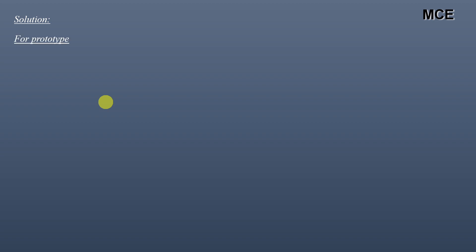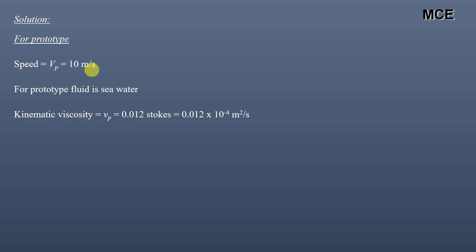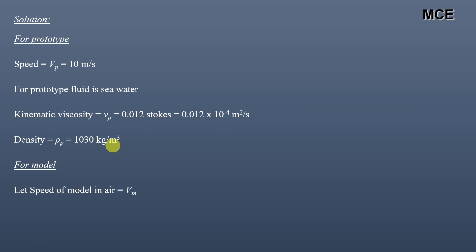The prototype is tested in sea water and the model is tested in the wind tunnel, so the fluid for the prototype is sea water and for the model it is air. For the prototype, the speed in sea water is Vp = 10 m/s. The kinematic viscosity of sea water is 0.012 stokes, or 0.012 × 10⁻⁴ m²/s. The density of sea water is 1030 kg/m³. For the model, let the speed in air be Vm.